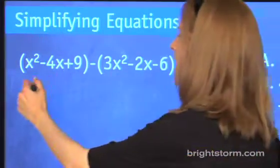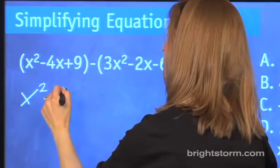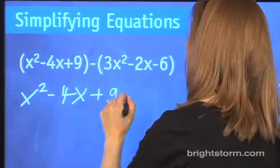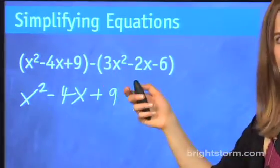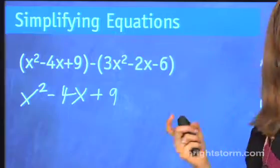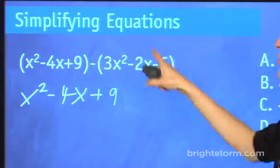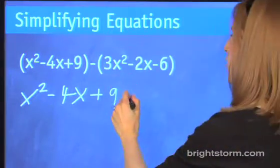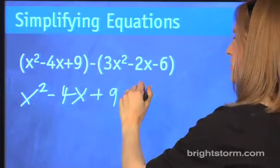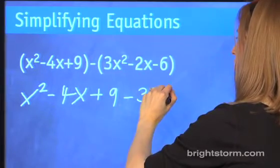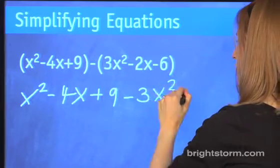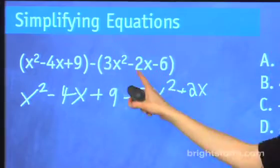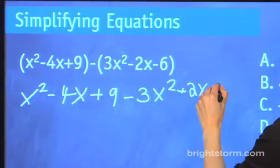So we're going to get rid of the parentheses. x² - 4x + 9. And now the next part. Students often mess up on this, so keep an eye out. You want to distribute your negative. It is so important. It needs to go to every one of your terms because your parentheses means that it's got to travel to every one of the parts. So, minus 3x² plus 2x because you've got two negatives there. So, plus 2x and then also plus 6.